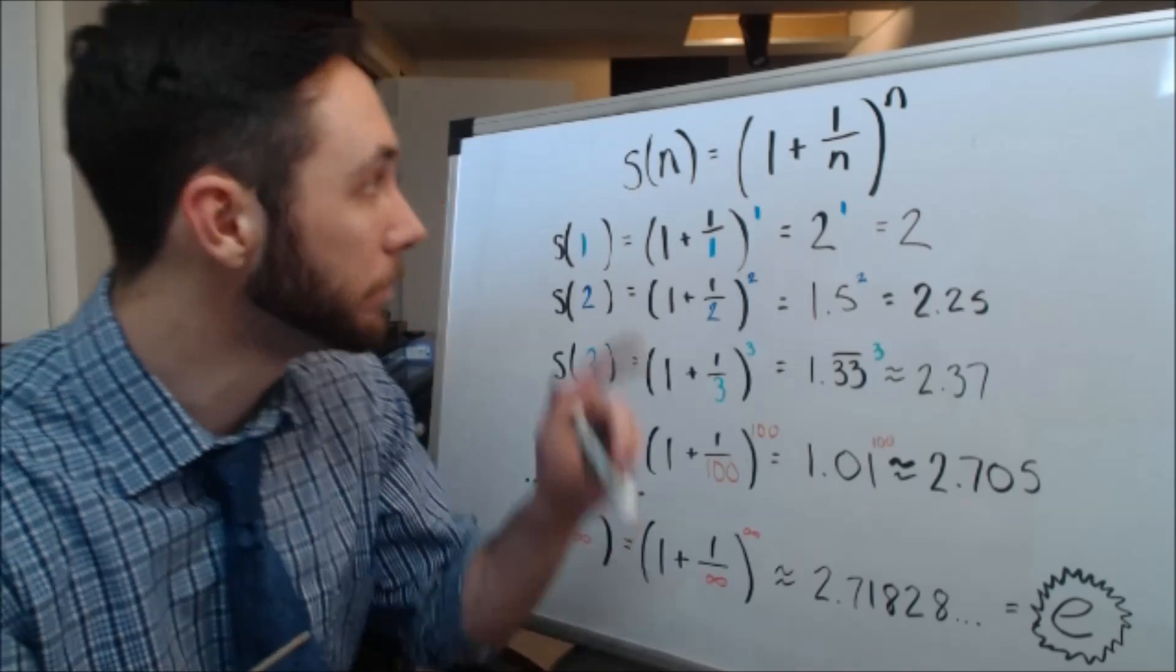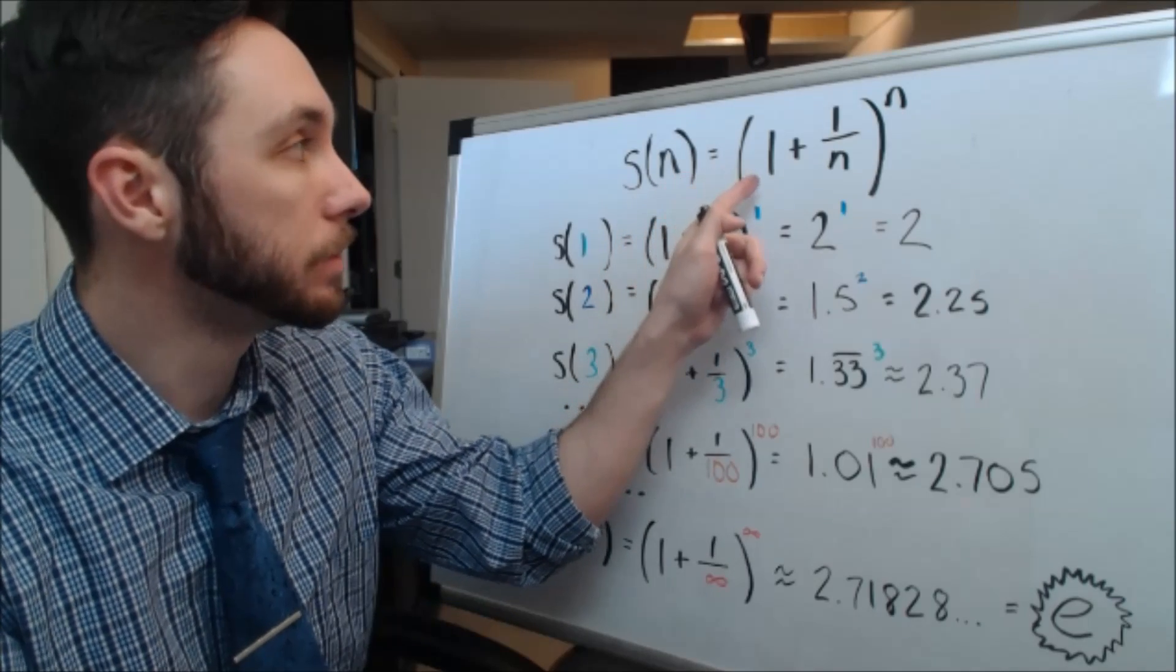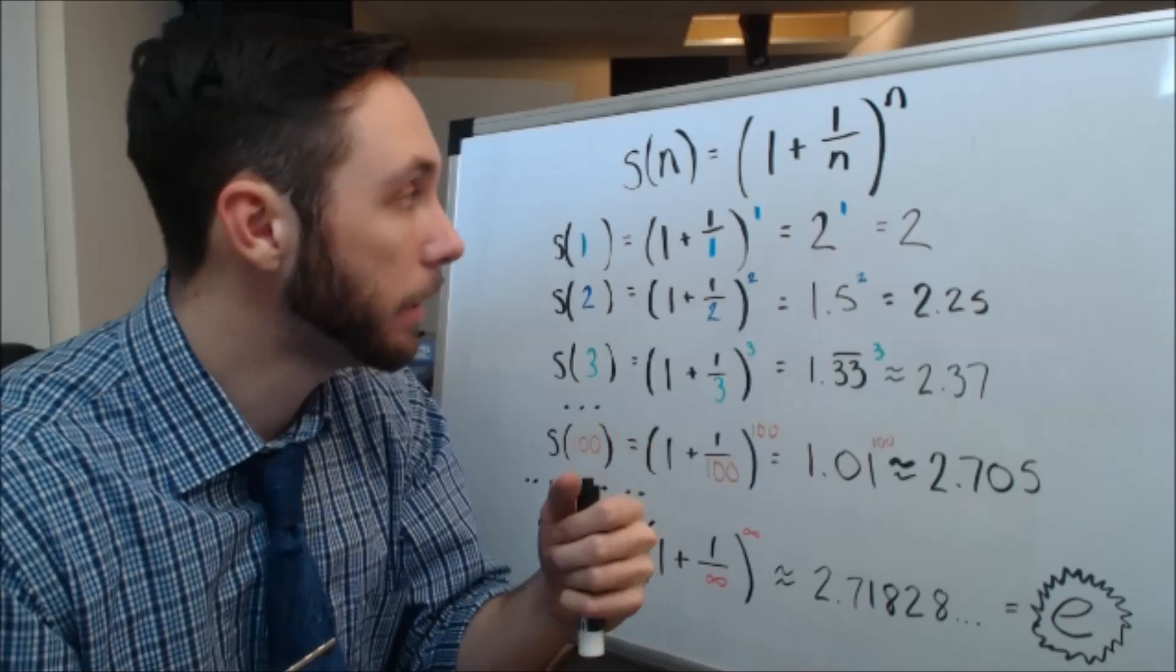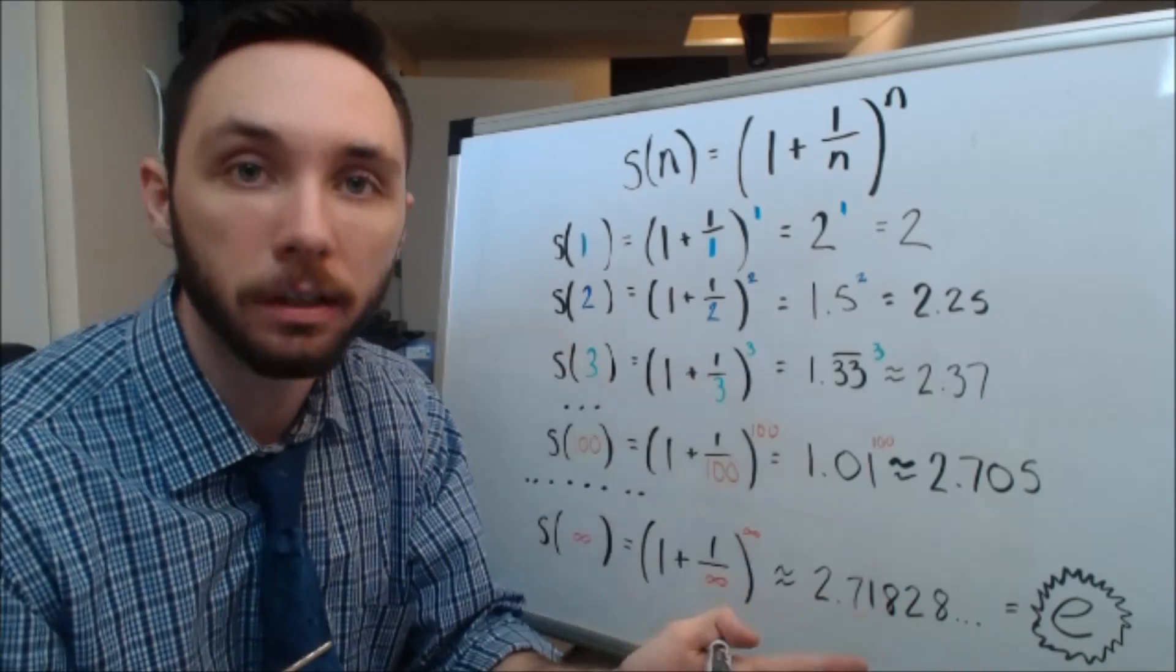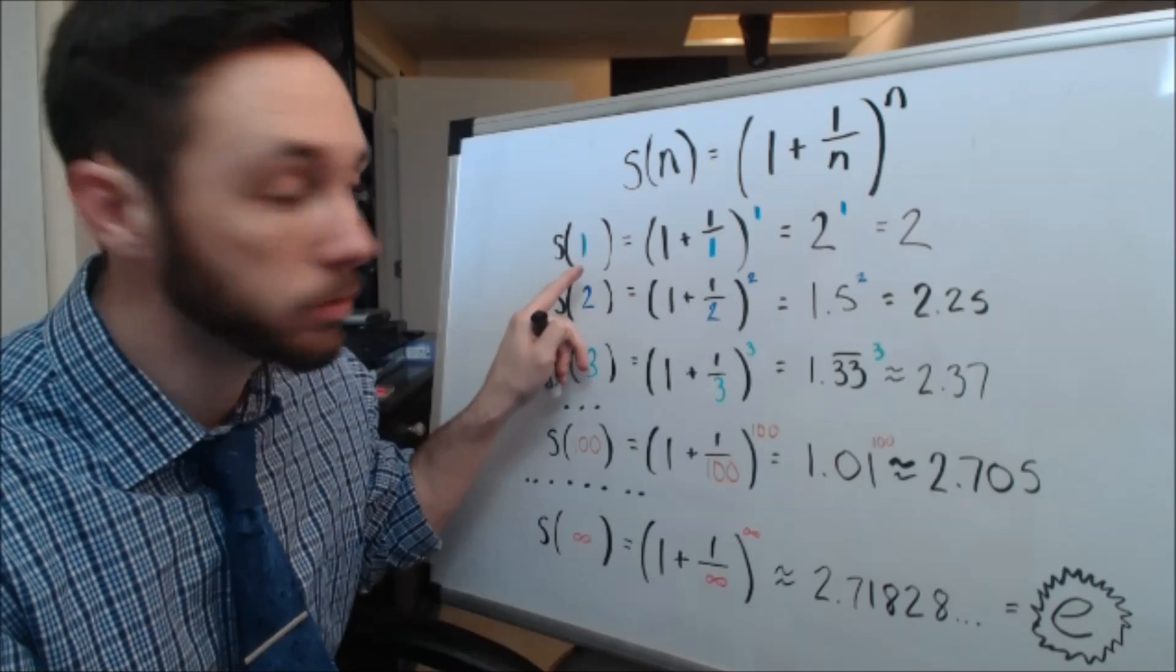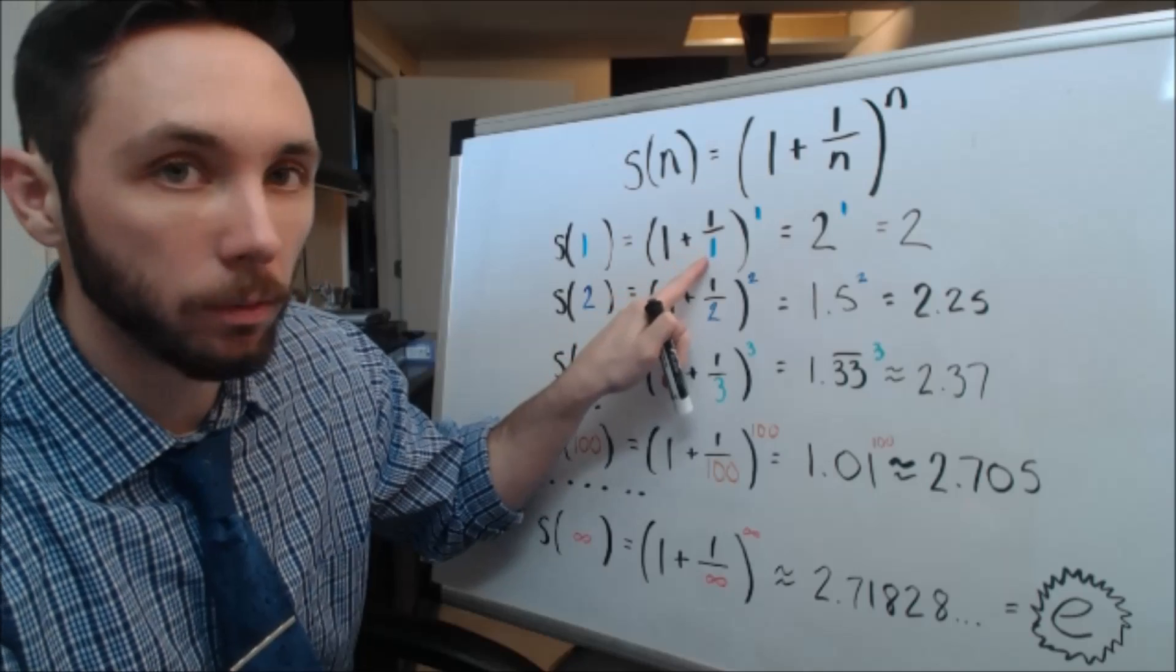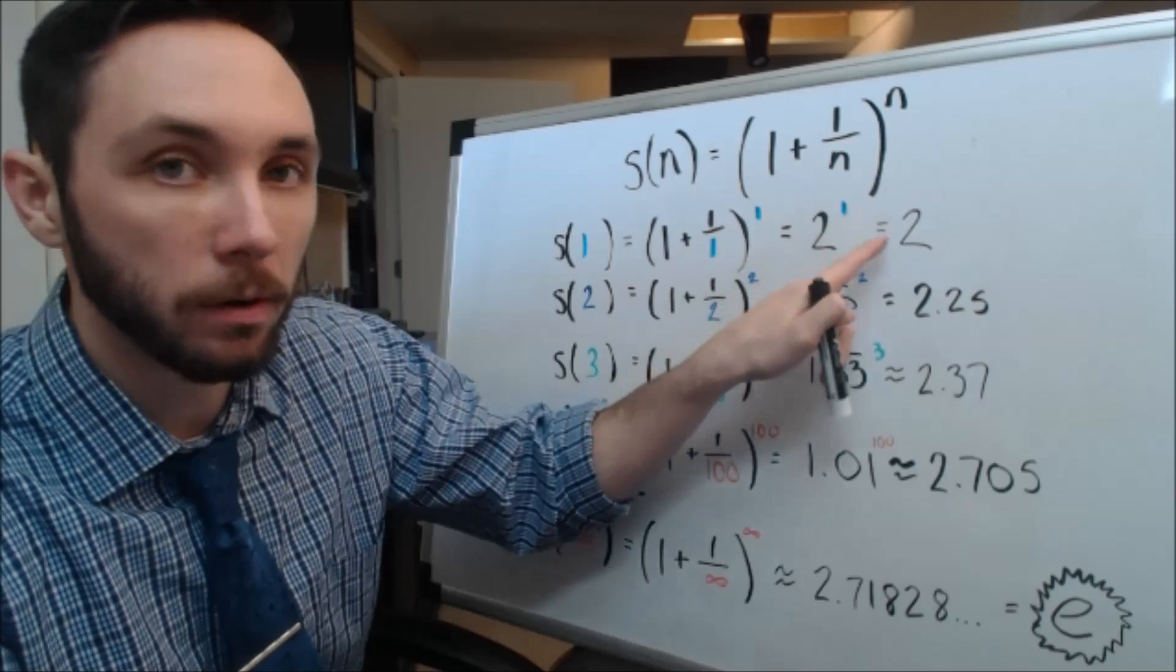I want you to consider the following. Here I have S of n, the function, where I have it set equal to the quantity of 1 plus 1 over n to the nth power. Now, I want to play around with this idea. What I mean by that is I want to plug in some values to see what comes out. Let's say I want to figure out what S of 1 is. I want to plug in a 1 for these n's. So, I replace this n with a 1, and I replace this n with a 1. And I'll get 1 plus 1 over 1. 1 over 1 is just 1. 1 plus 1 is 2. So, 2 to the first power, that's just 2.